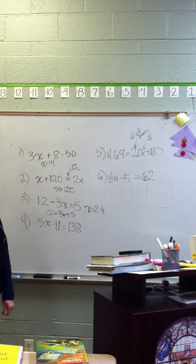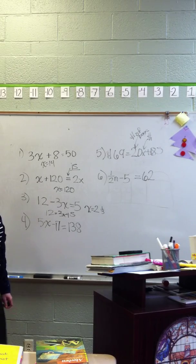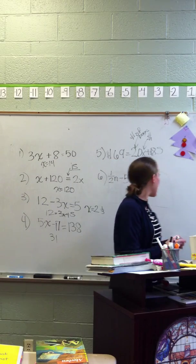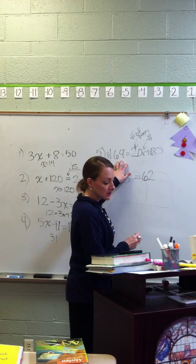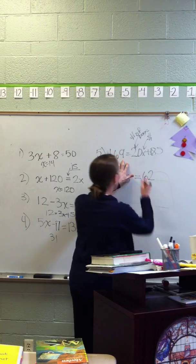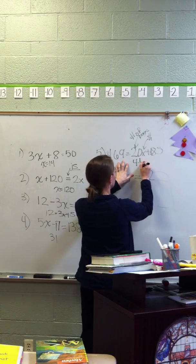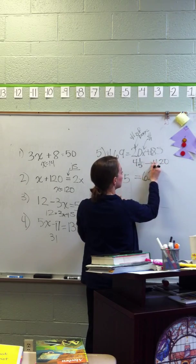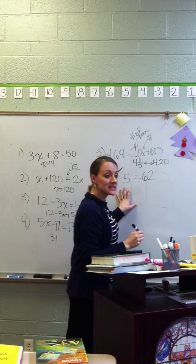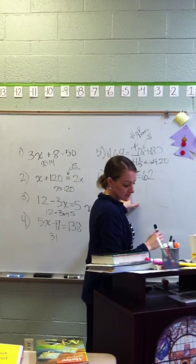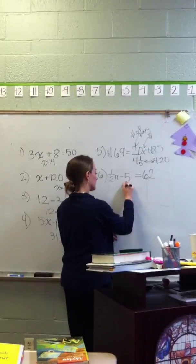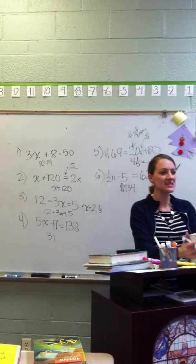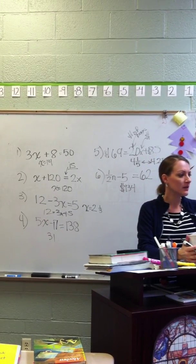Alright. Number four. Alright. 31. 31. Alright, and number 5. What is it? 4 and 1 fifth. Or 4.20. Either one, they're the same thing. Number 6. 134. Give me a thumbs up or a thumbs down. This isn't so bad, right? Could you do number 2? Absolutely.